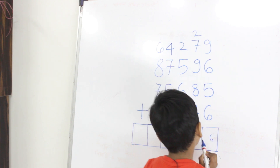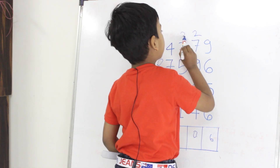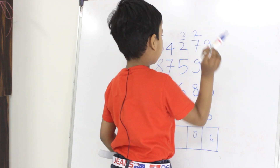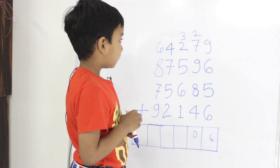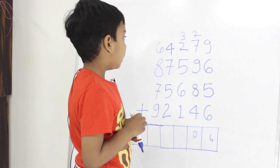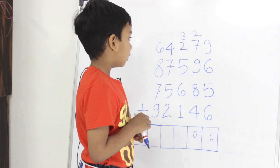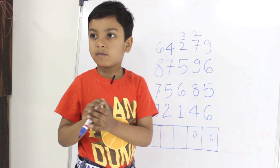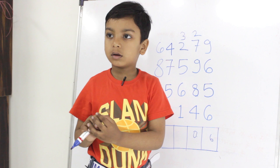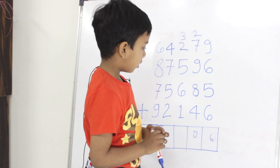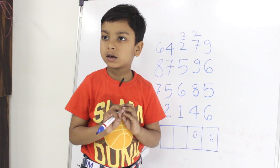Here. 3, 3, upar. 3 plus 2: 5. 5 plus 5: 10. 10 plus 5: 15. 10 plus 7: 17.